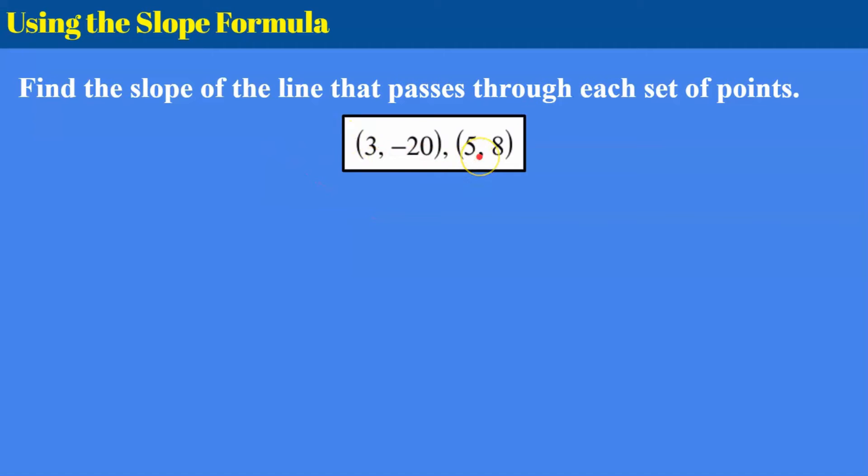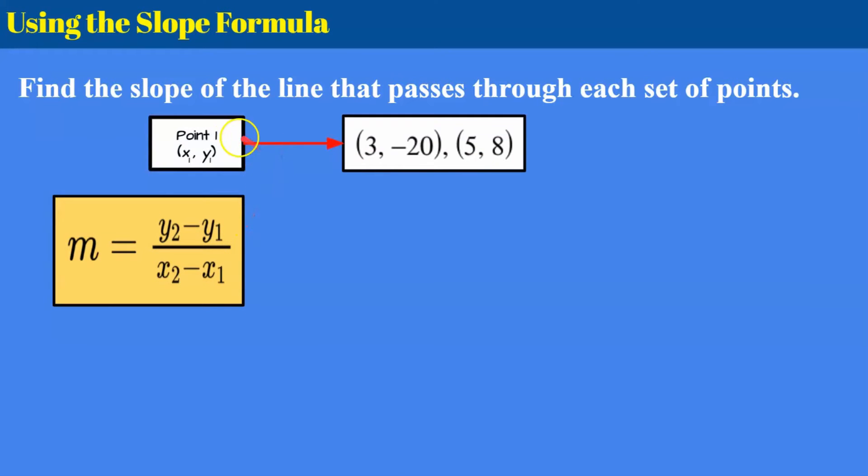So here are two points that I've been given. I don't know what the line looks like and I'm not even going to graph it. I just know that somebody is telling me that this point and this point fall on a line and they want to know what the slope of that line is. So I have my slope formula ready to go. I'm going to identify the ordered pair (3, -20) as point 1 and the ordered pair (5, 8) as point 2.